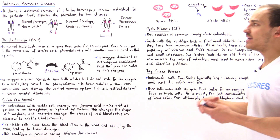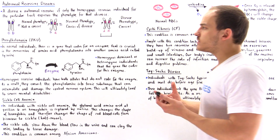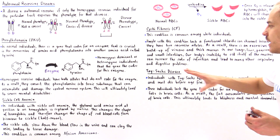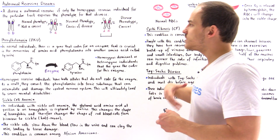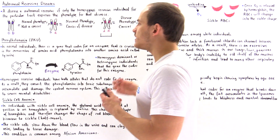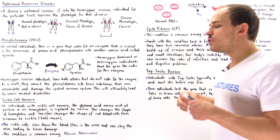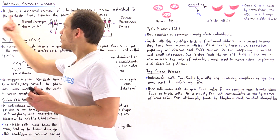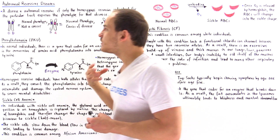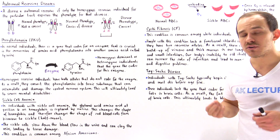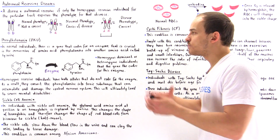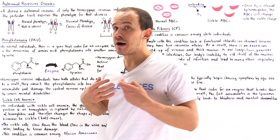Now that we know what we mean by an autosomal recessive disease, let's quickly look at four individual examples. We won't go into too much detail on each disease; we'll simply discuss briefly what they mean. Let's begin with phenylketonuria. Under normal conditions, individuals who are homozygous dominant or heterozygous have a gene that codes for a special protein that breaks down the phenylalanine amino acid into another amino acid known as tyrosine.